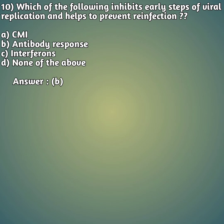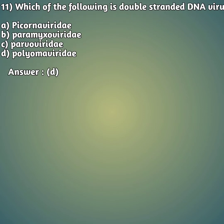Tenth question: which of the following inhibits early steps of viral infection and helps prevent reinfection? Option A: CMI. Option B: antibody response. Option C: interferons. Option D: none of the above. The right answer is B — antibody response. Here CMI stands for cell-mediated immunity.